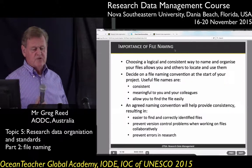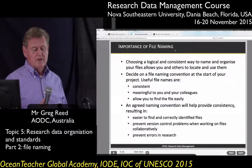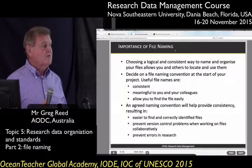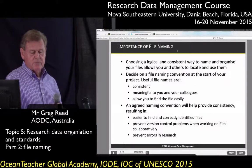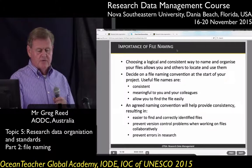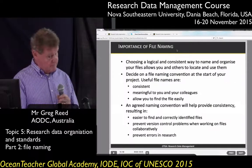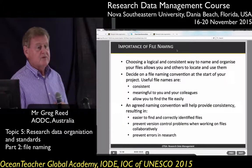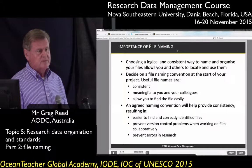Names should be consistent, they should be meaningful to you and to your colleagues, and they should allow you to find your files easily. An agreed naming convention will help provide consistency, resulting in files that are easy to find and correctly identified. It will prevent version control problems when working on files collaboratively and prevent errors in research. This is something you need to address when managing research data — coming up with standard file naming.